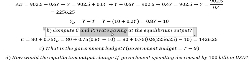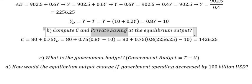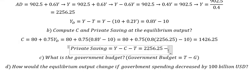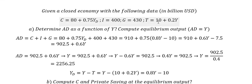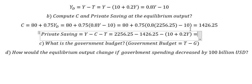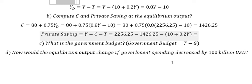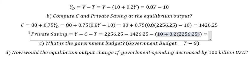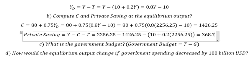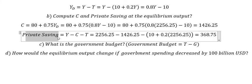The next one, that is about private saving. So the formula of this one should be about Y minus C minus T. Y, we know that is about this one. C, that is about this one. And T, that is about Y, that is about this number. So we calculate about this one, and we got 368.75, and this is the answer for private saving.